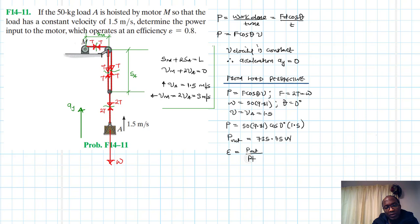And let's find the power in. So we know this efficiency is equal to power out divided by power in and this is 0.8 equal to 735.75 divided by PIN. PIN therefore is just equal to 919.69 watts.